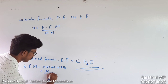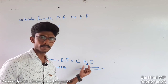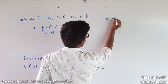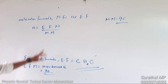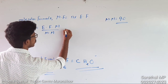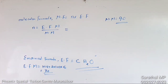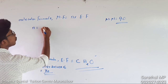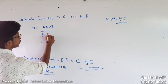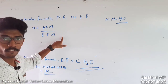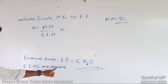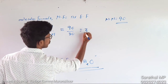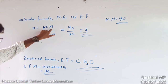The empirical formula mass of CH₂O is: carbon 12, plus hydrogen 2 times 1, plus oxygen 16 — that equals 30. Now we calculate n: molecular mass divided by empirical formula mass equals 90 divided by 30, which gives n equals 3.